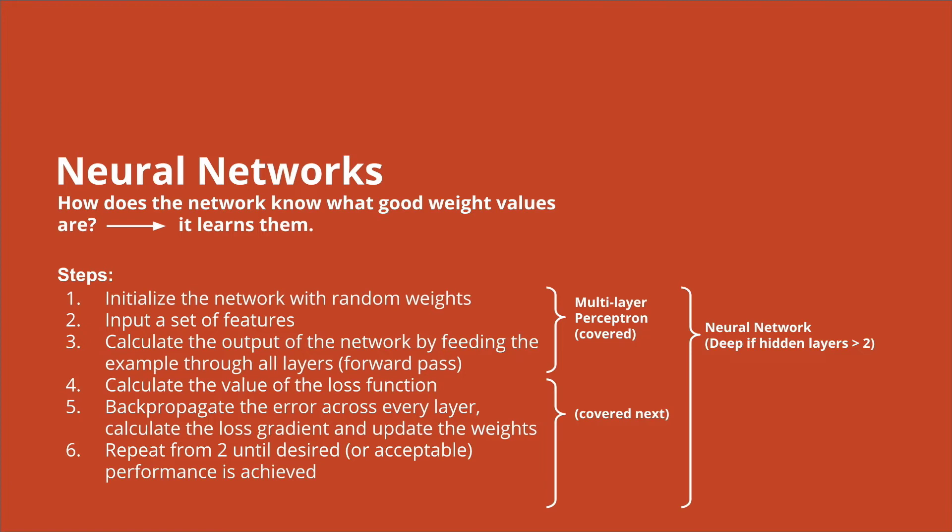Then we feed in an input example, and that can be, for example, one of our handwritten digits that we saw earlier. We then run a full forward pass of the network, calculating the output of one example. And if it's a handwritten digit, then we would probably calculate the probability of what digit we think that it is.